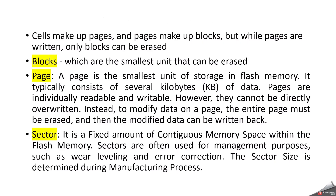Cells make up pages and pages make up blocks, but while pages are written, only blocks can be erased. A block is the smallest unit that can be erased. A page is the smallest unit of storage in flash memory, with a size of several kilobytes. Pages are individually readable and writable; however, they cannot be directly overwritten — to modify data on a page, the entire page must be erased first. A sector is a fixed amount of contiguous memory space within the flash memory, and its size is determined during the manufacturing process.